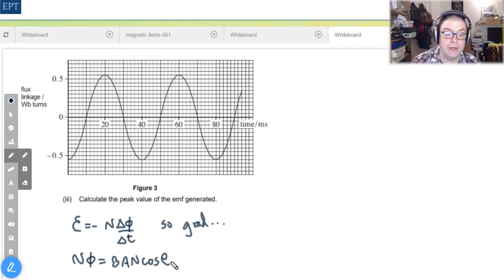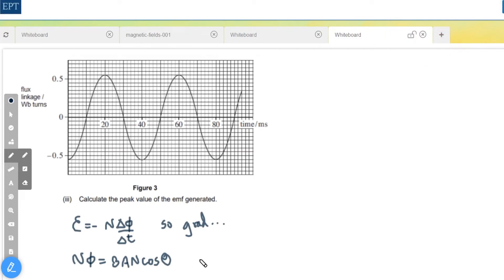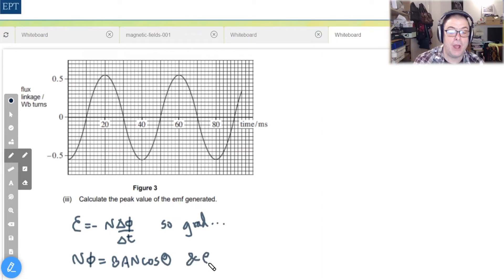And we can also recall from our work on circular motion earlier on in the course that θ equals ωt and the ω is equal to the angular frequency.